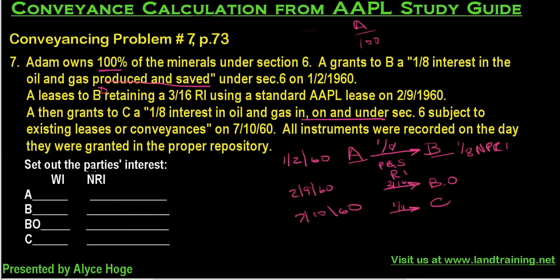The question asks us to set out the parties' interests. The easiest part is the working interest. Before A leases, if they want to drill a well on their own property they pay 100% of the costs — so A is 100% working interest before the lease. But the lease says the lessee takes A's 100% interest, pays all the bills, and gives A a percent of the production as royalty.